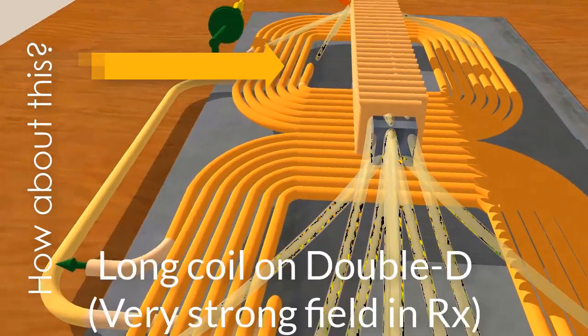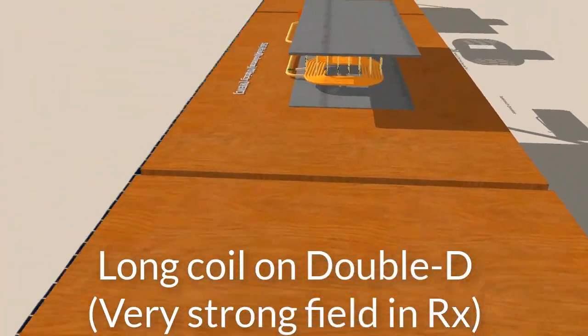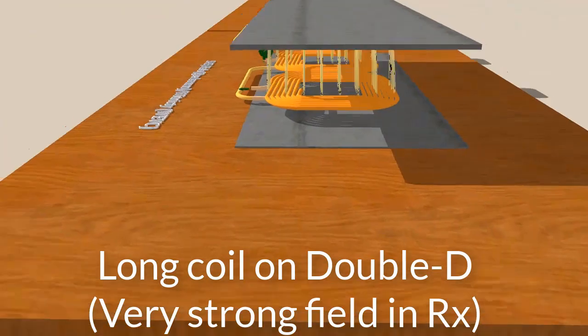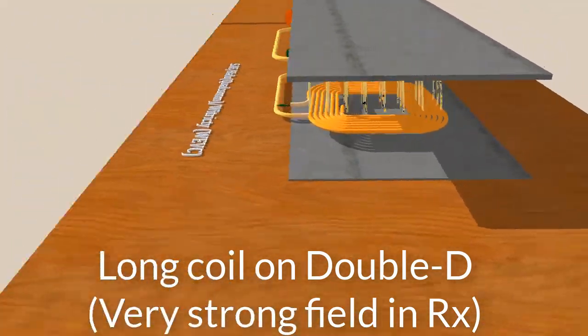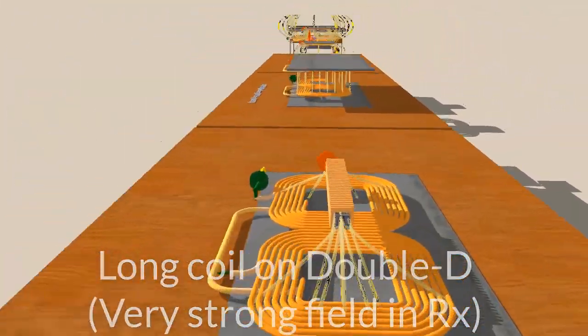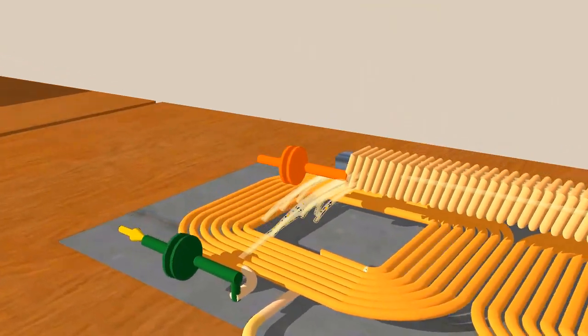So instead of the Double D coil as the receiver, put a longitudinal coil. The flux—the number of flux lines per cross-sectional area—is much higher now.